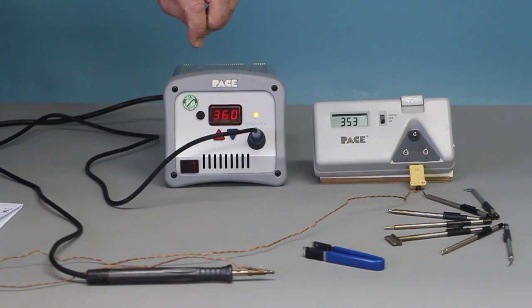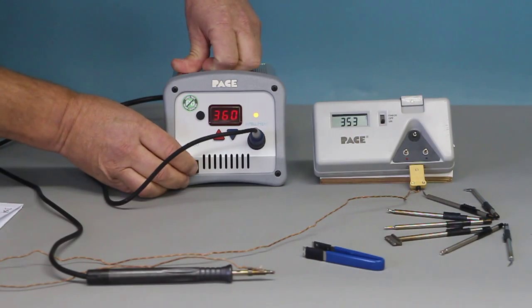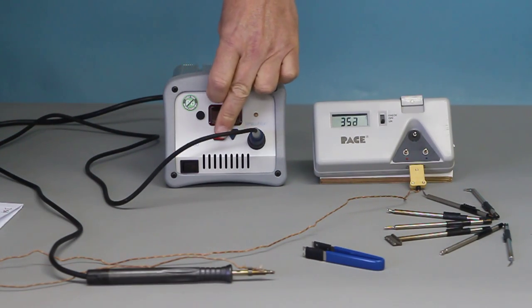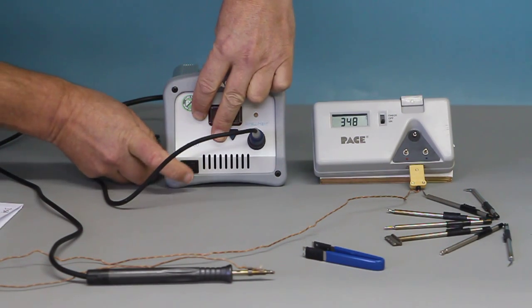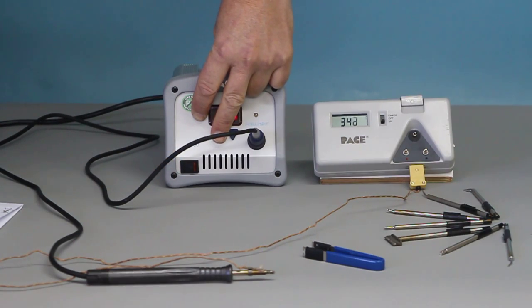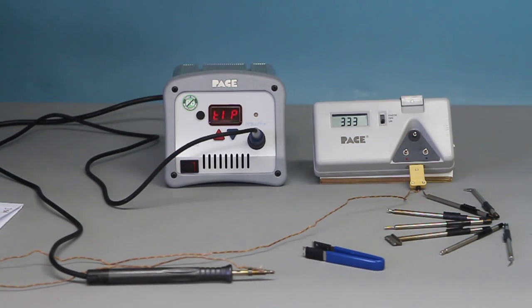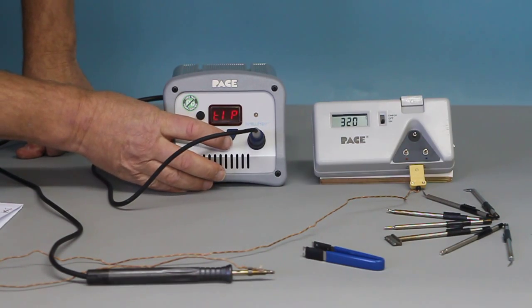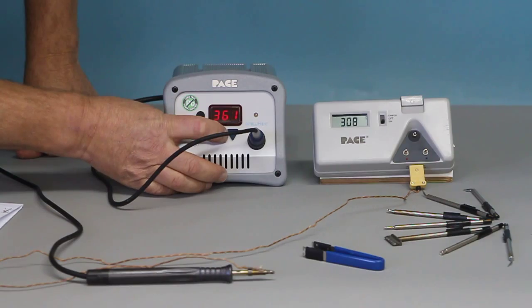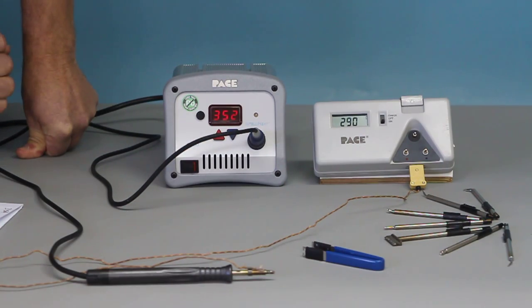Right, so to recalibrate I turn the station off, hold down the red and the black button, turn the station back on, fingers off both buttons, and I need to set the temperature at 352. There we go. Hit the button.